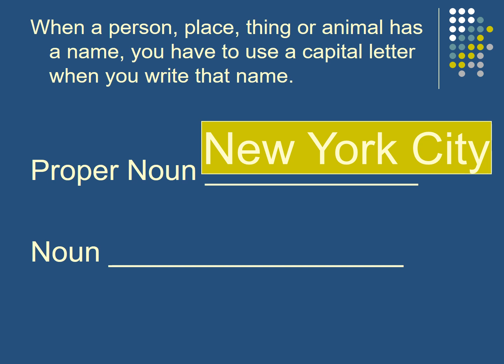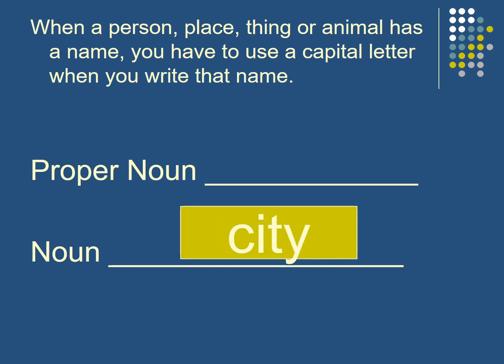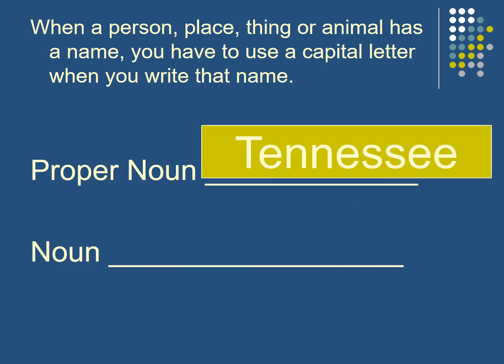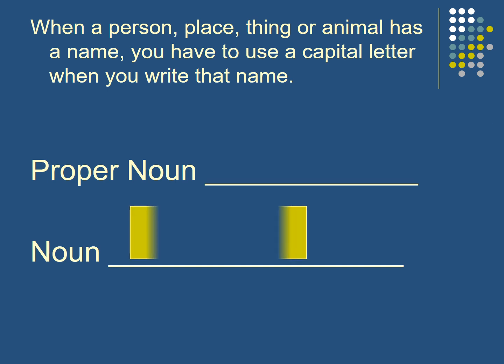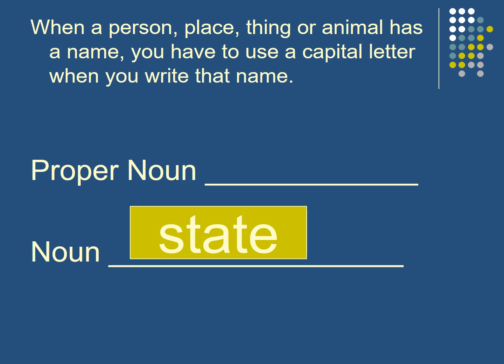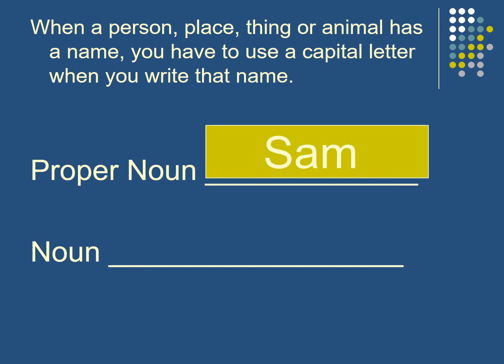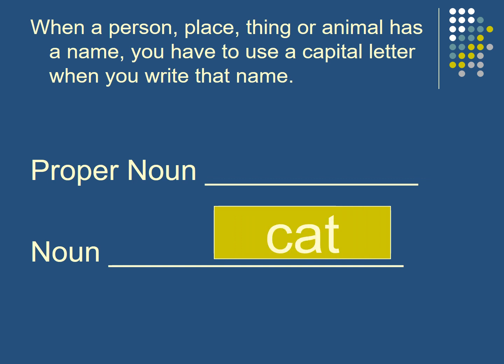If I have New York City, it's the name of the city. But what about city? It's any city, so it's a small letter — not a proper noun. What about Texas? It's a name of a place, so I have to capitalize it. What about state? It's any state — the United States has many states. What about Sam? It's a name of a boy. If I say boy or cat, it's any cat, any boy, so it's not capitalized.